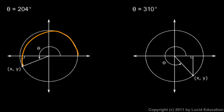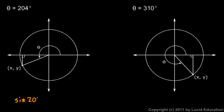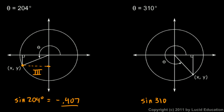If we rotate around to quadrant 3, this angle is a 204 degree rotation. The sine of 204 degrees equals negative 0.407. So the y-coordinate right there is negative 0.407 — that's the position on the y-axis of that point, and the sine is negative in quadrant 3. Rotating all the way into the fourth quadrant with a 310 degree angle, the sine of 310 degrees is negative 0.766, which is the y-coordinate of that point. We are in quadrant 4 and the sine is negative.